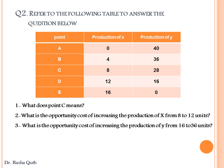Third: what is the opportunity cost of increasing the production of Y from 16 to 36 units? Here we are moving from point D to point B. In order to increase the production of Y by 20 units, from 16 to 36, we give up 8 units of X, from 12 to 4 units. So the opportunity cost of increasing the production of Y from 16 to 36 units is the 8 units given up from the production of X.